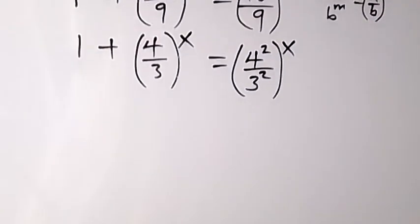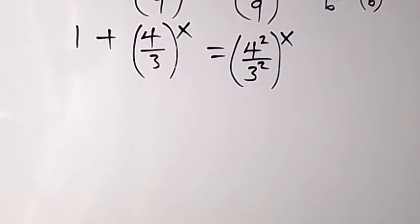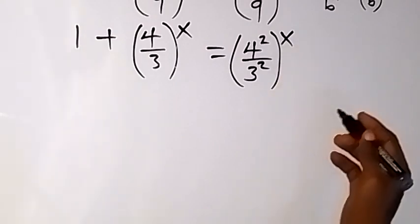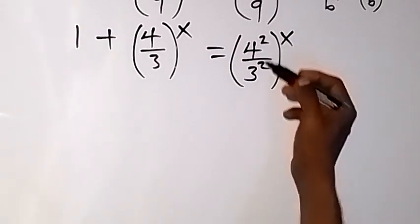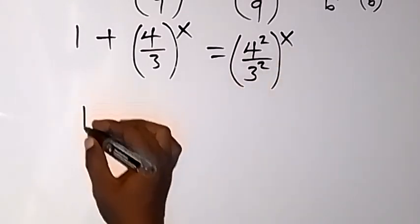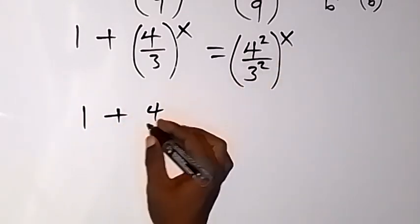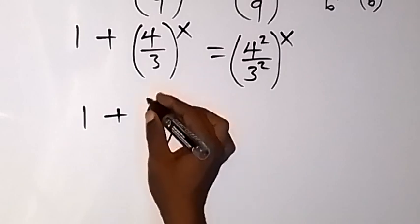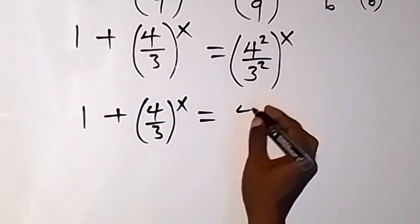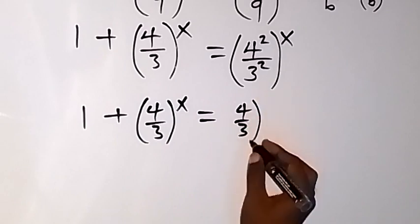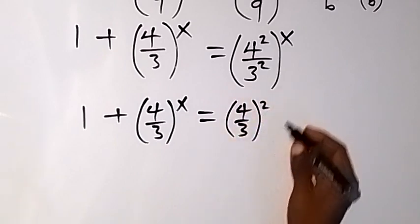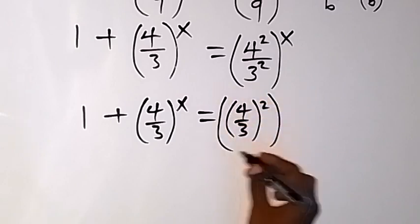From here, we can apply the law of indices and take 2 out. So we have 1 plus 4 over 3, all raised to power x, equals 4 over 3 raised to power 2, then all raised to power x.